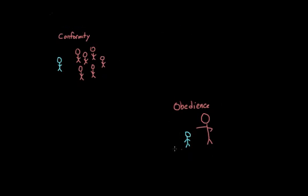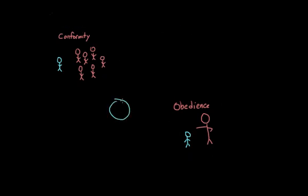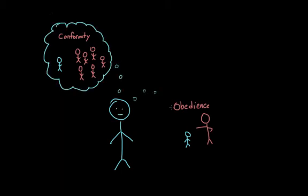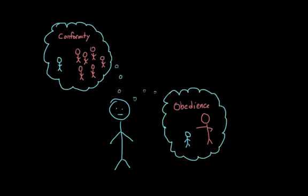And one thing that you might be wondering after hearing all of this is whether or not there is a certain type of person who is more likely to conform or more likely to obey. And the answer seems to be no. There is no one personality that leads people to be more susceptible to groups or to authority.